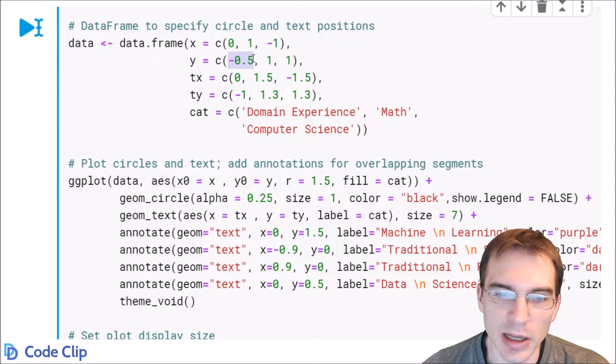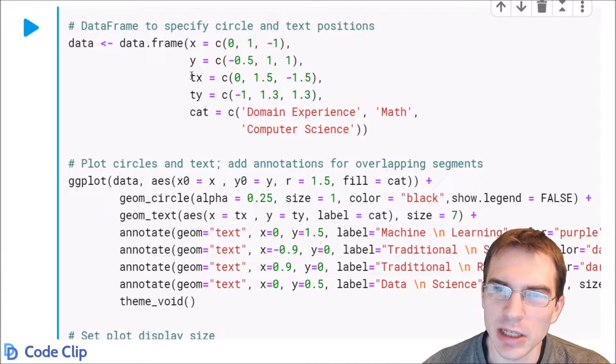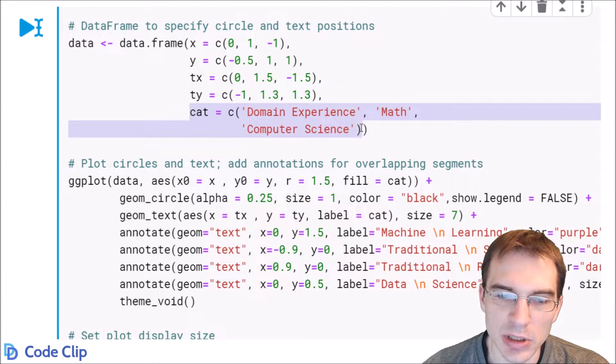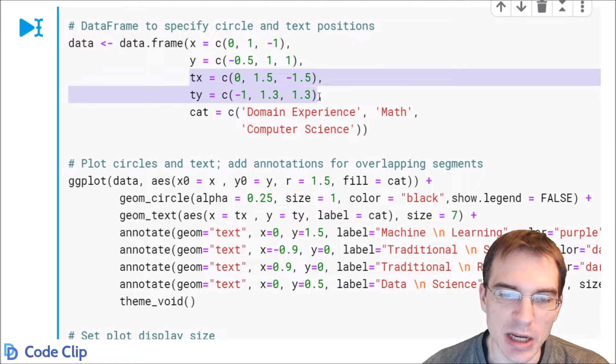So x zero, y negative five, x one, y one, etc. And then these other columns I'm adding to the data frame are just specifying other things like the category names here and the position for some text.